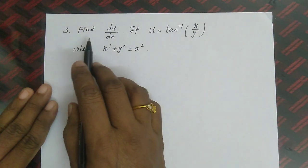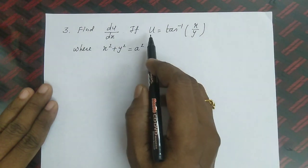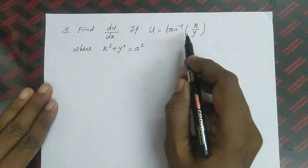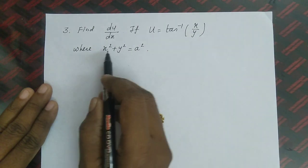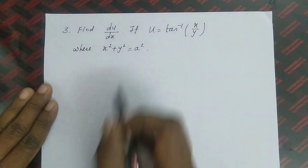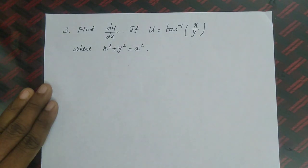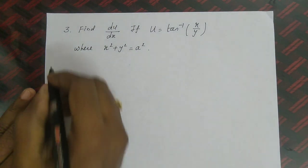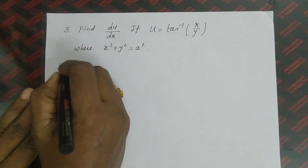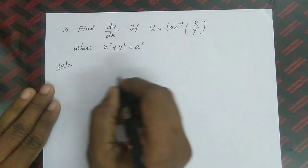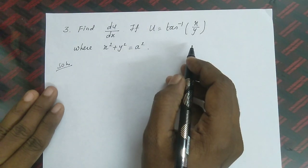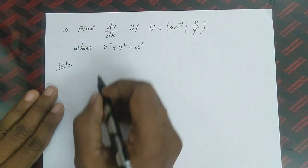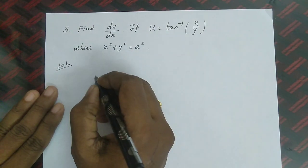Third question: Find du/dx if u = tan⁻¹(x/y) where x² + y² = a². This problem is similar to the previous one.